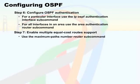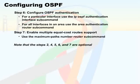In step 7, we enable multiple equal-cost routes support using the 'maximum-paths number' router sub-command. Remember that steps 2, 4, 5, 6, and 7 are actually optional.